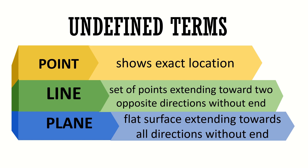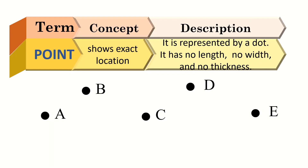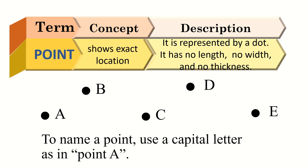Let us illustrate these three undefined terms to better understand them. First, a point. It is represented by a dot. It has no length, no width, and no thickness. To name a point, use a capital letter as in point A. For our illustration, we have point A, point B, point C, point D, and point E.